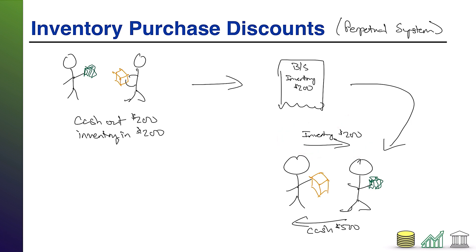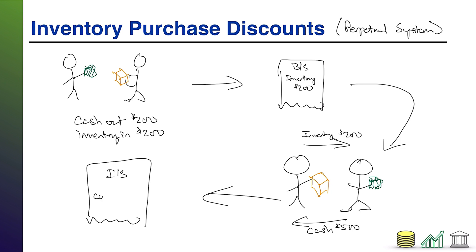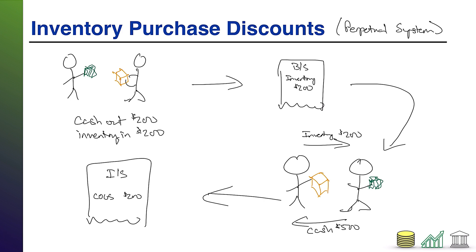That $200 inventory going out becomes the cost of goods sold on our income statement — the cost of the merchandise we sold to the customer. On our income statement we show cost of goods sold of $200. The $500 cash we brought in is the revenue we get to recognize, so we also have sales revenue of $500. The difference of $300 is our gross profit.